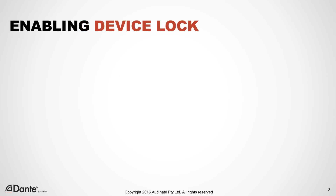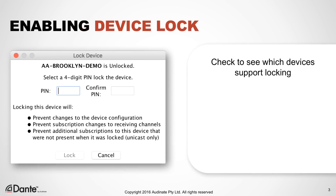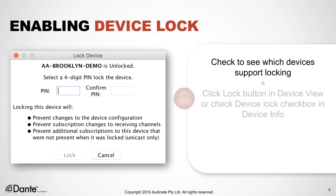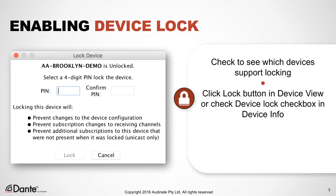Enabling Device Lock: First, determine if Device Lock is supported on devices in your network. Device Lock is activated per device by checking the Device Lock box in the Device Info tab, or by clicking the Lock button in Device View. Then, enter a 4-digit PIN and confirm.